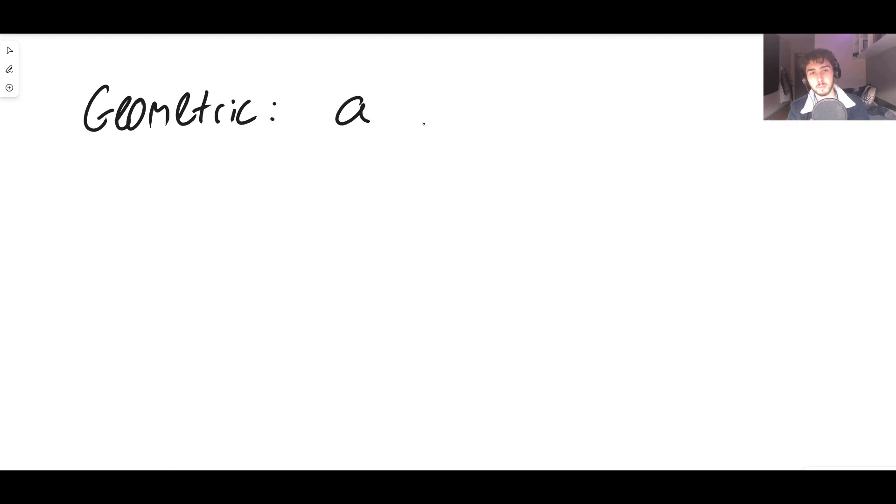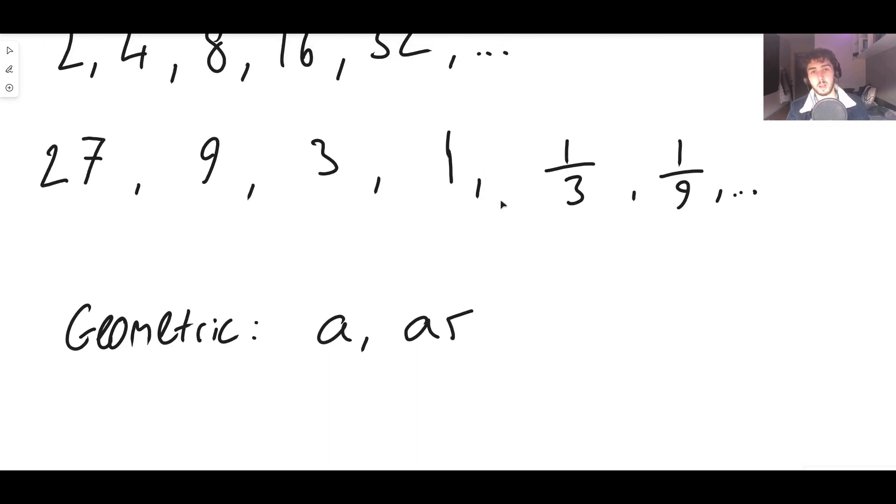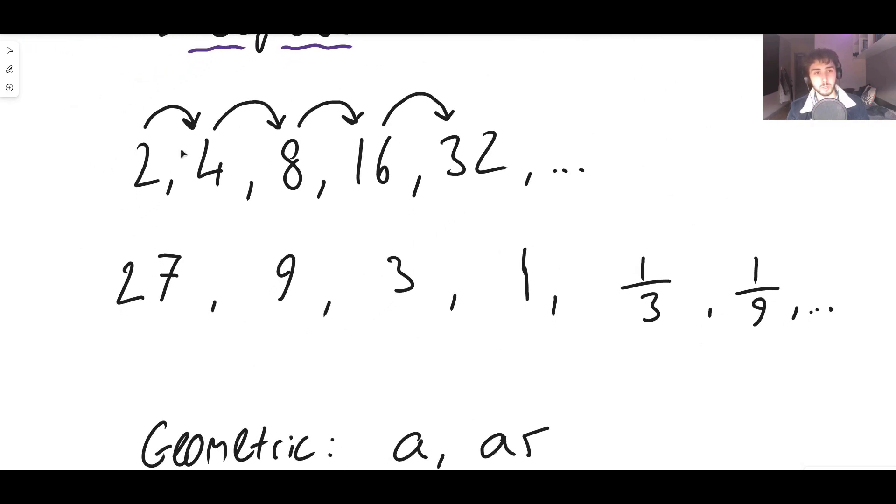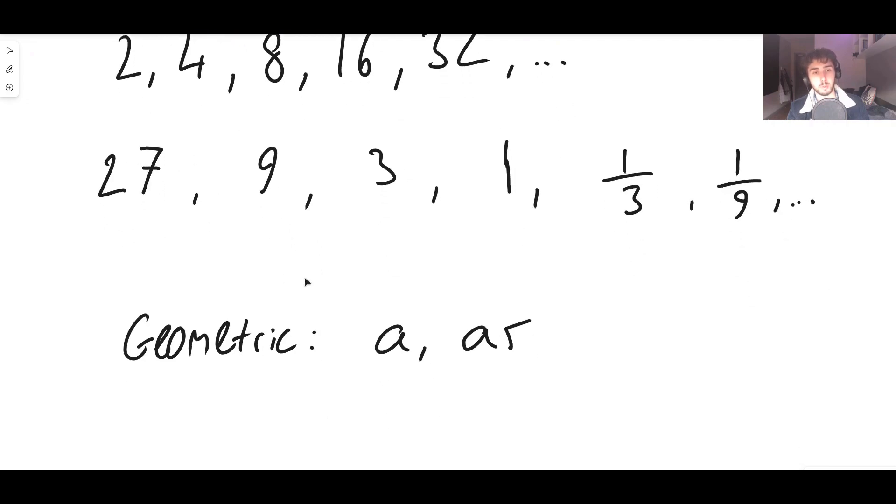The first term is a, that's always the first term, regardless of whether it's arithmetic or geometric. Now, for an arithmetic sequence, the next term would be a plus d. This time, though, it's a times whatever the common ratio is, r. So, for example, r in the first example was 2. In the second example, it was a third, etc.